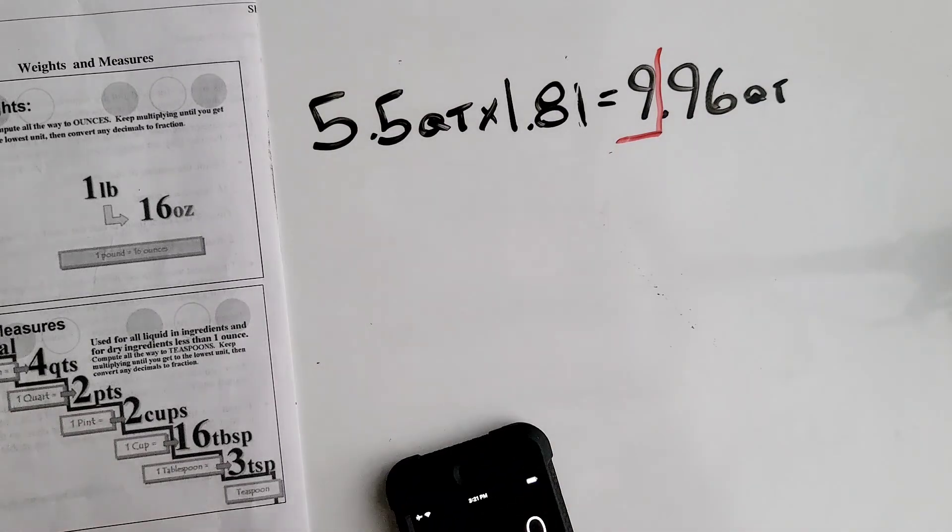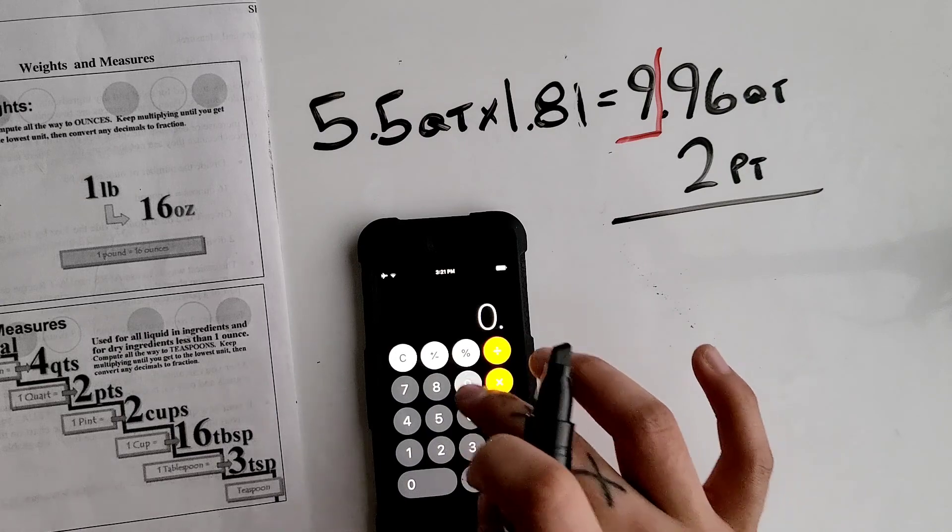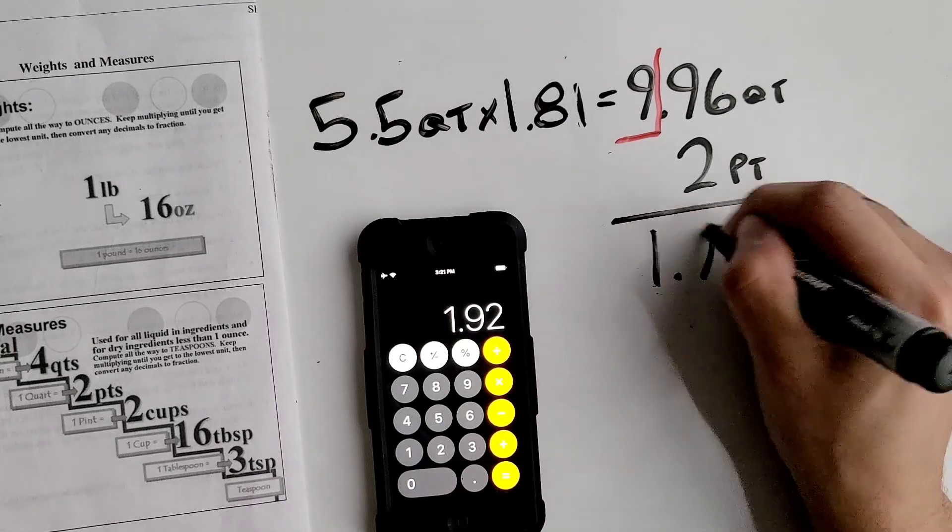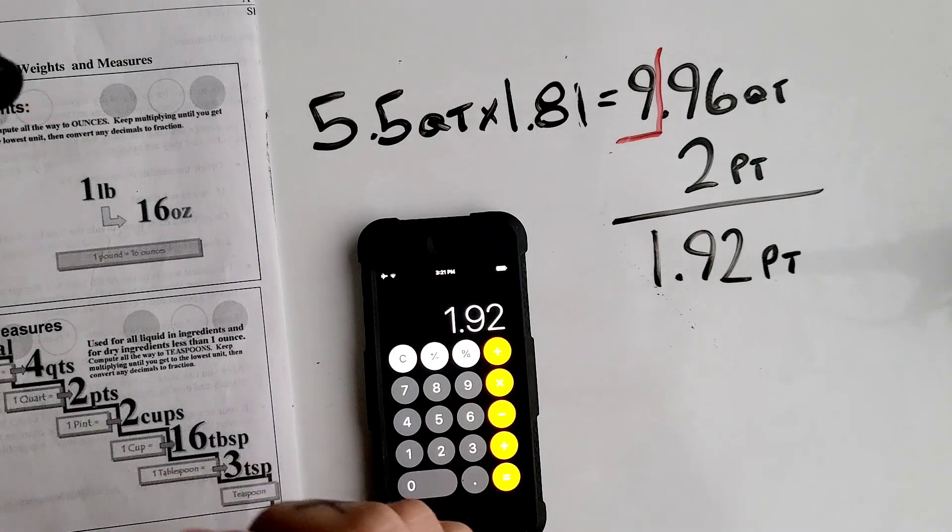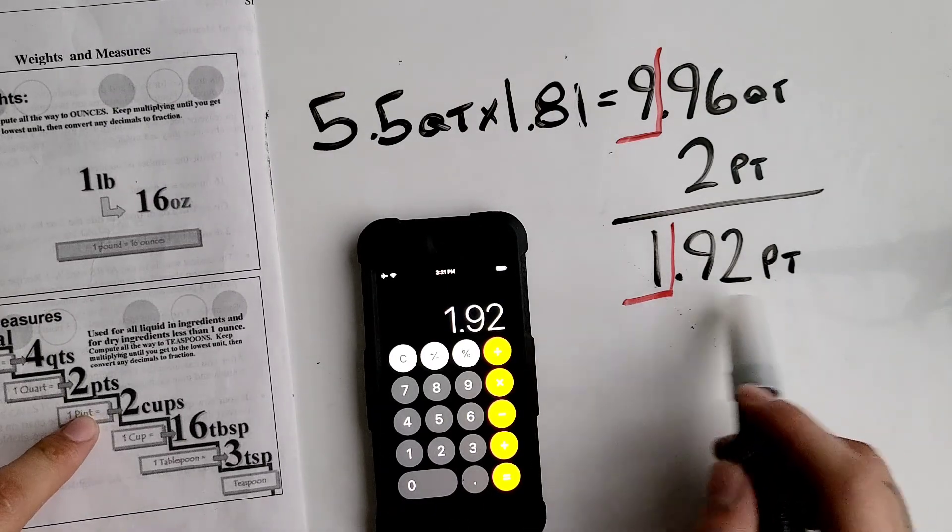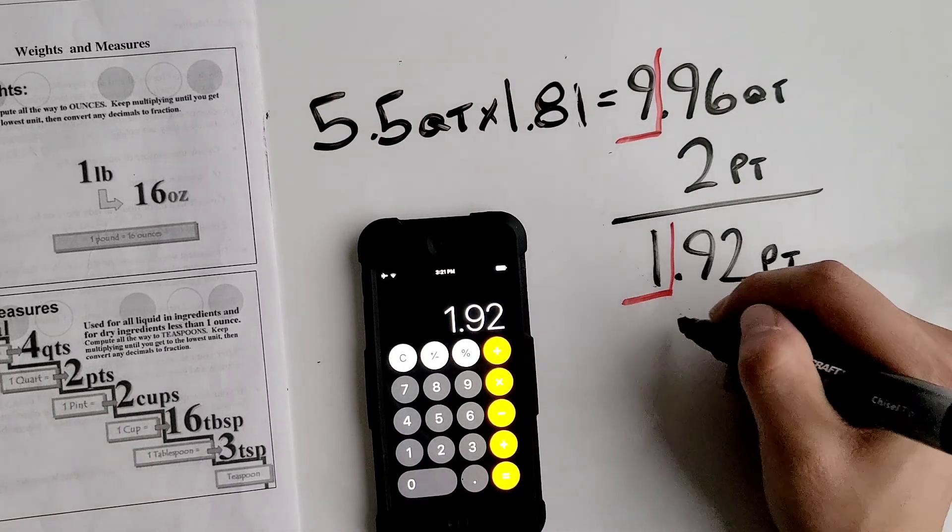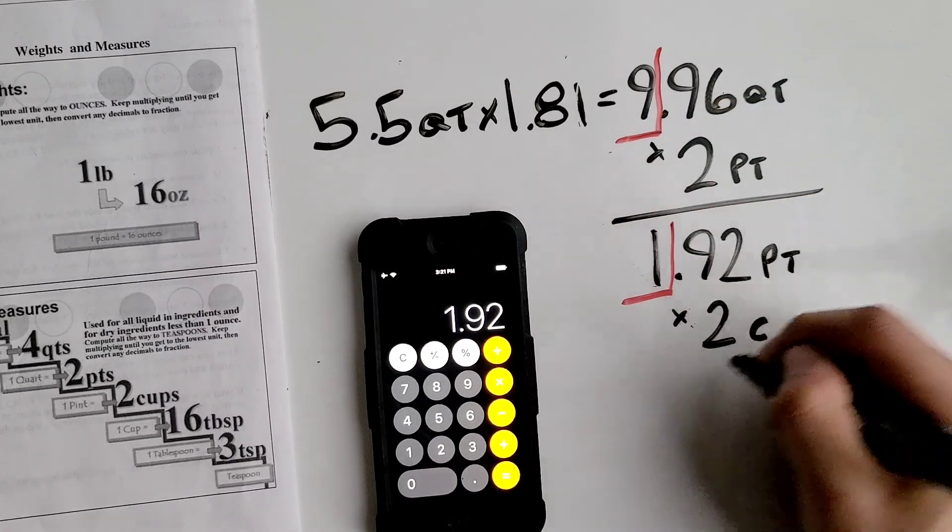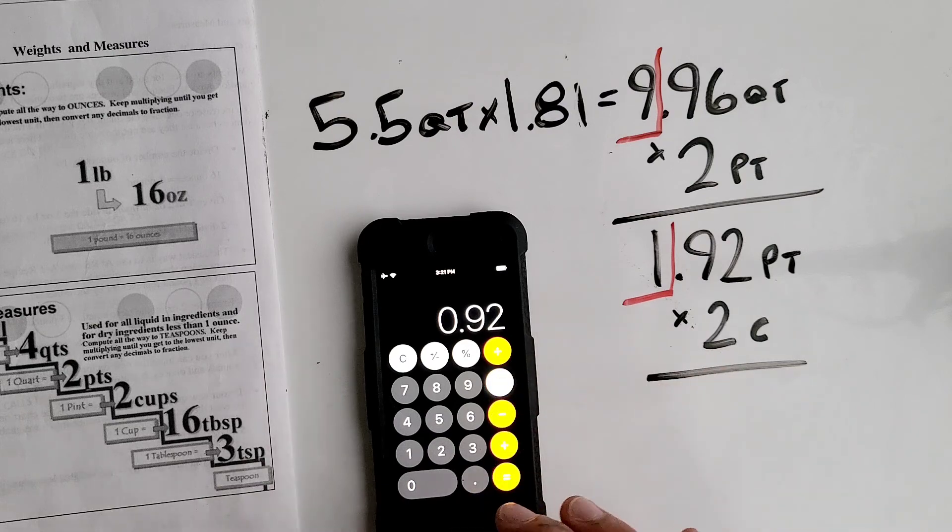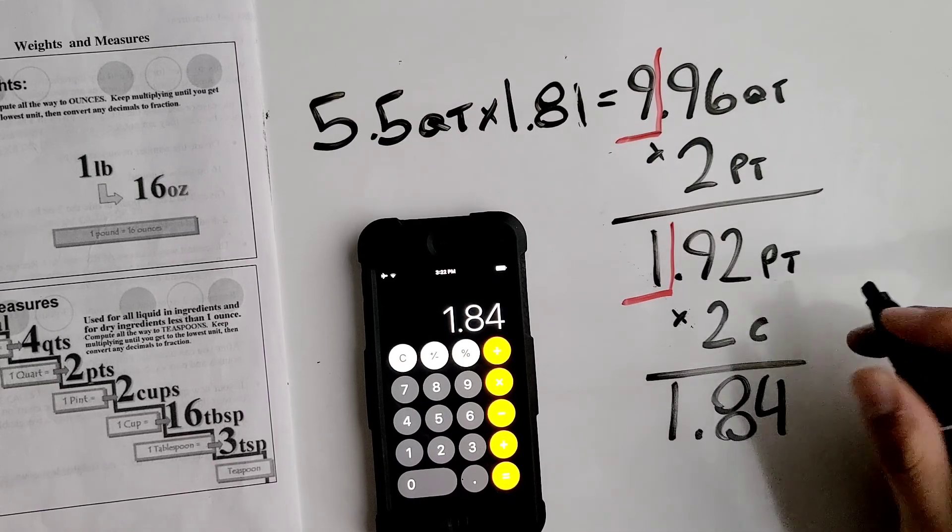We have to multiply the 0.96 quarts by 2 pints. So 0.96 times 2 equals 1.92 pints. We're going to block off our whole number and multiply the remainder, the decimal, with your unit under it. So 0.92 pints times 2 cups equals 1.84 cups.